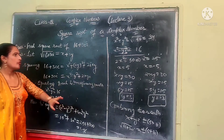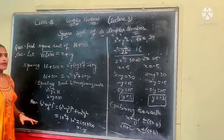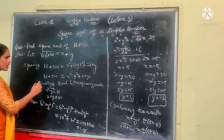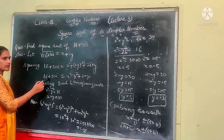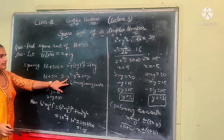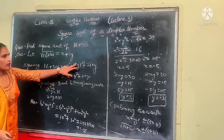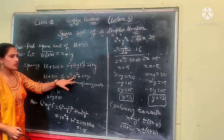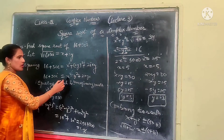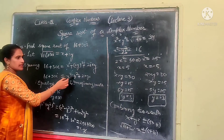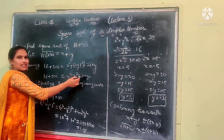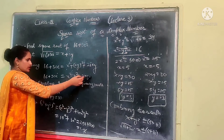According to the formula (a plus b) whole square, and since iota squared equals minus 1, we get 16 plus 30 iota equals x squared minus y squared plus 2xy iota.